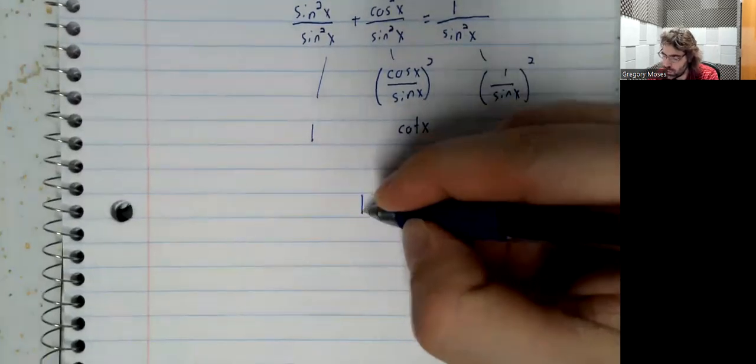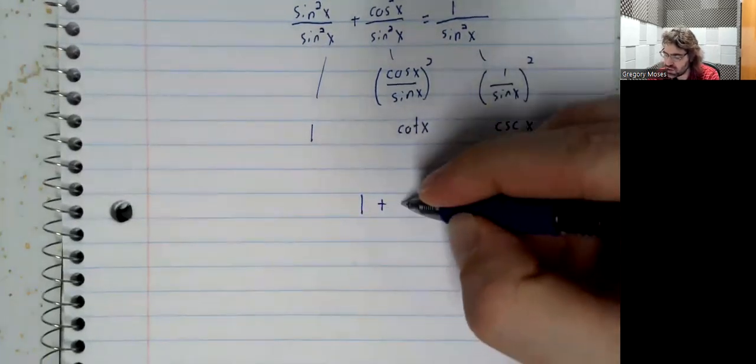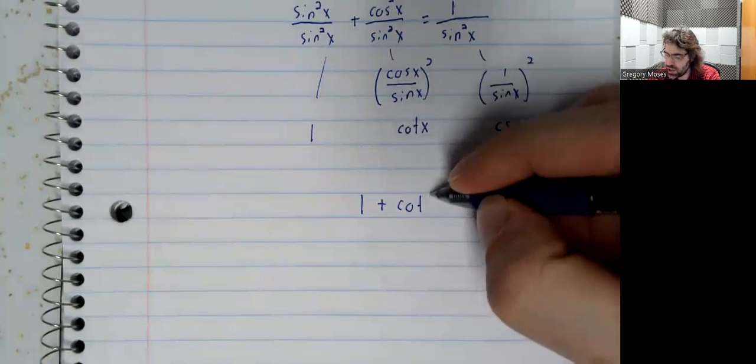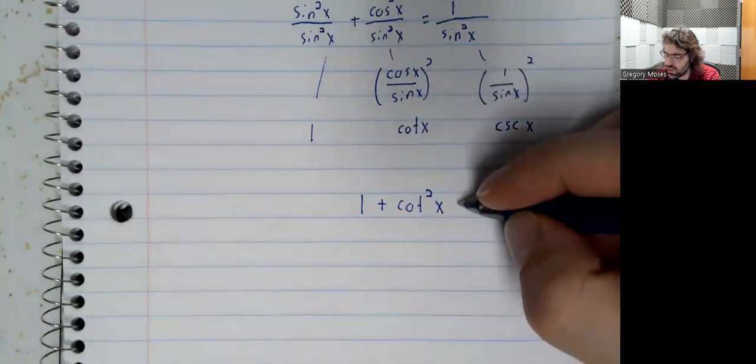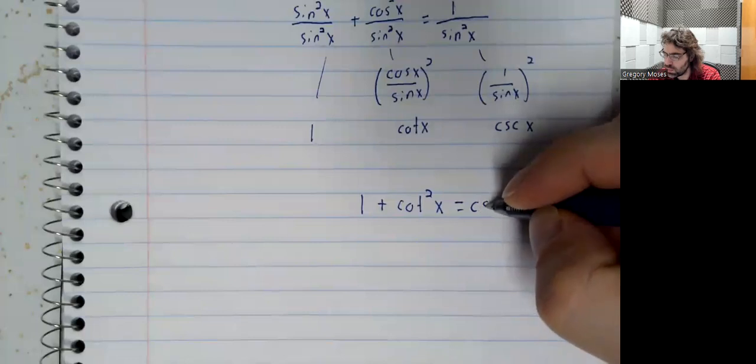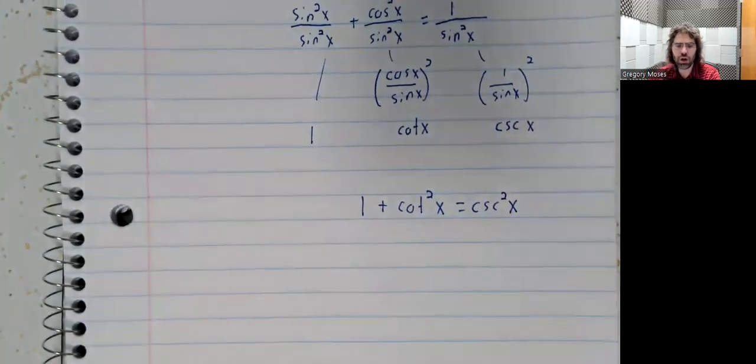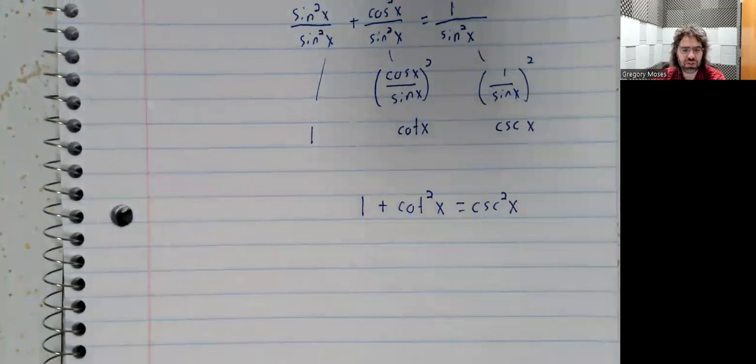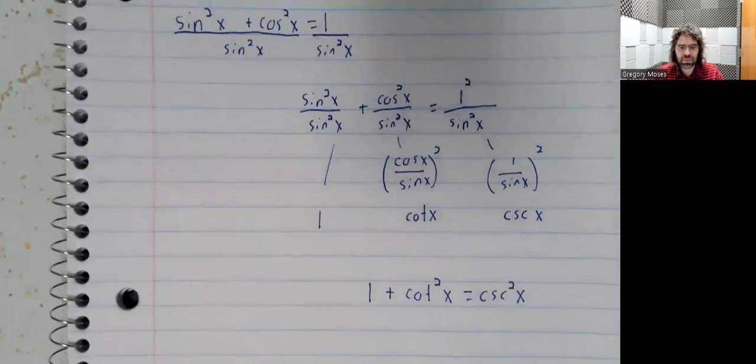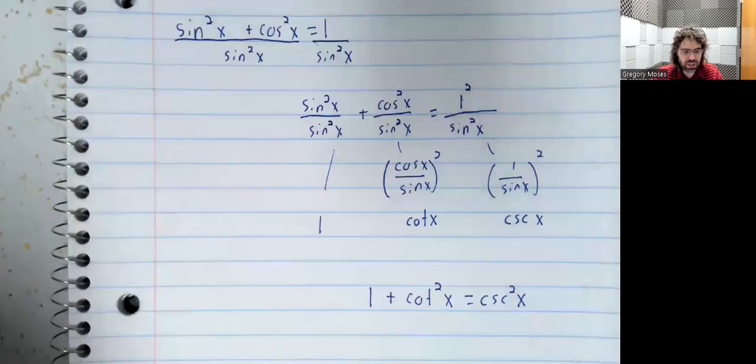One plus the cotangent squared of x equals the cosecant squared of x. And that came from dividing by the sine squared.